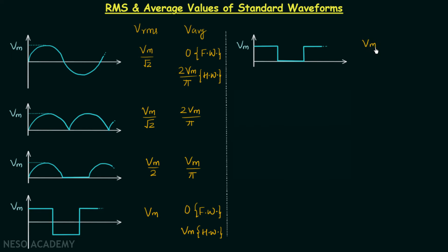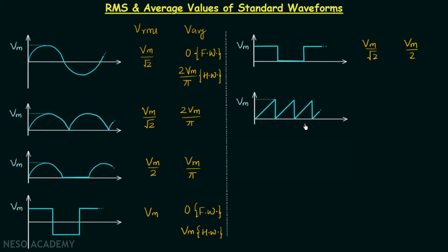Moving on to the fifth waveform: the RMS value is equal to Vm over root 2, and the average value is equal to Vm over 2. The sixth waveform is the sawtooth wave, for which the RMS value is equal to Vm over root 3, and the average value is equal to Vm over 2.